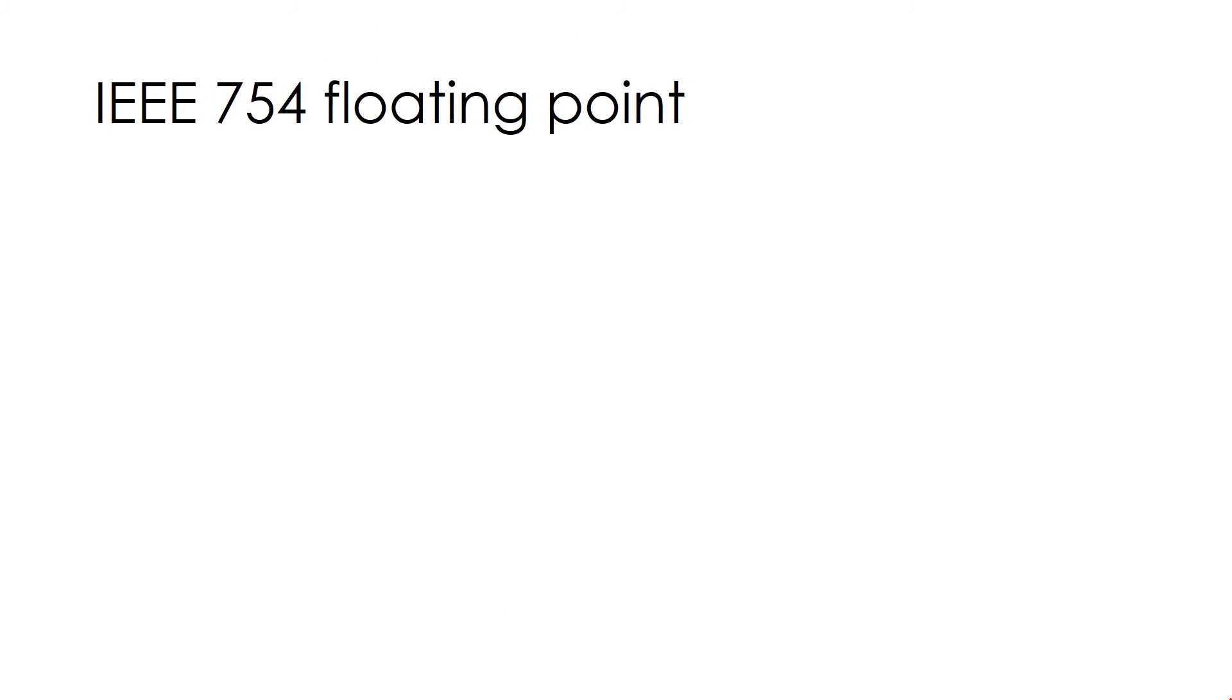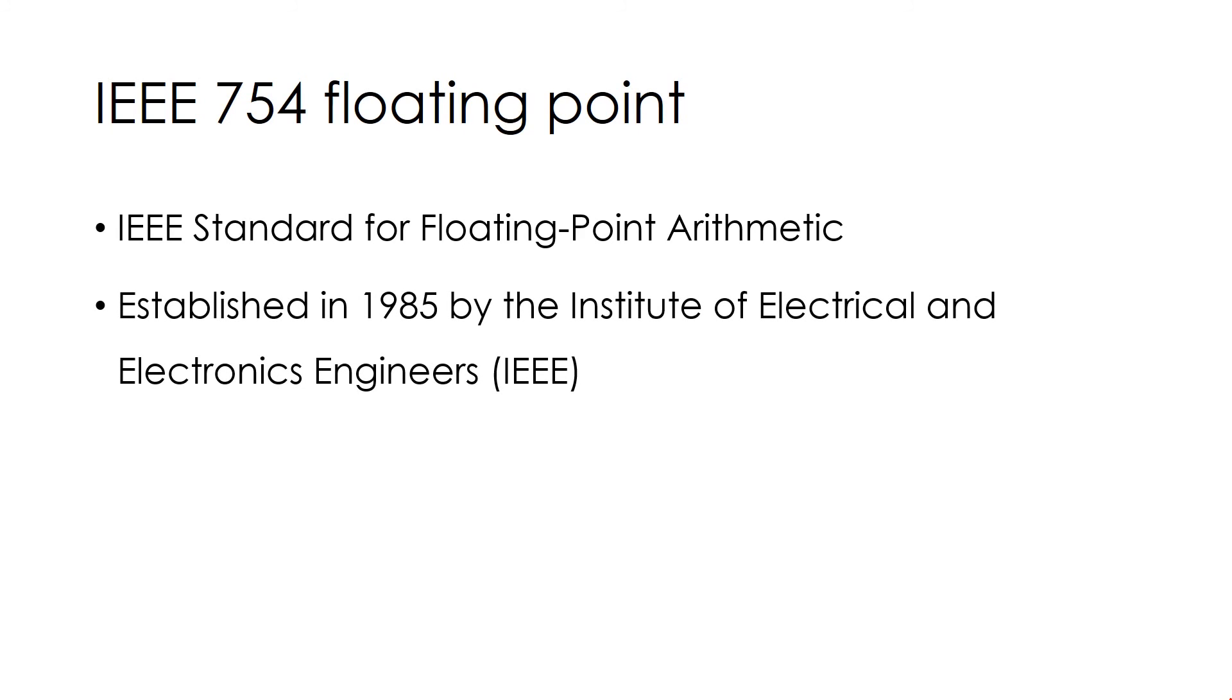IEEE 754 floating point format is the IEEE standard for floating point arithmetic, established in 1985 by the Institute of Electrical and Electronics Engineers. Initially there was so much divergence in representations of floating point numbers, that's why IEEE 754 got introduced and later adopted universally.